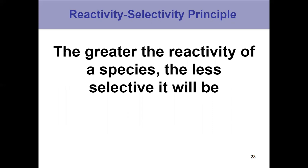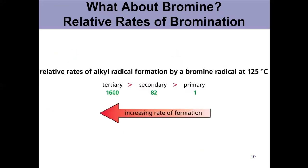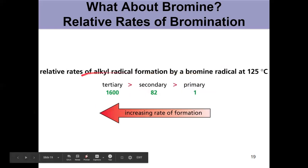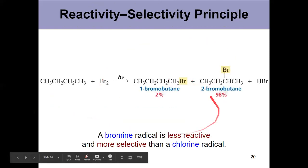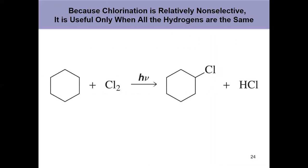With chlorine they're all relatively similar, which is why we get a distribution of products — not great if you're designing a synthesis. Bromine is less reactive and more selective; it has more preference for where it's going to react. Bromine is unreactive and highly selective. Bromination is more selective than chlorination. If you're given these numbers and a product, you should be able to predict the percent yield — here's one you can do for practice.